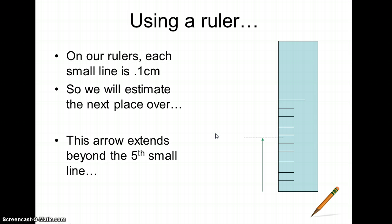And because, in this case, the arrow extends beyond the fifth small line, but not quite to the sixth, I could estimate that it's somewhere between 0.5 and 0.6, 0.57 centimeters. Now, maybe you looked at that and you thought 0.58, that's okay, or 0.56, again, not a problem, as long as you make sure that your measurement expresses one estimated digit, in my case, the seventh.